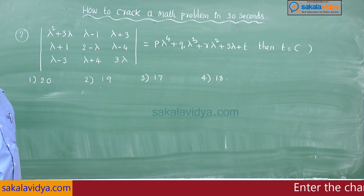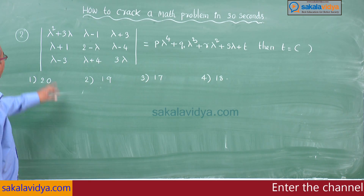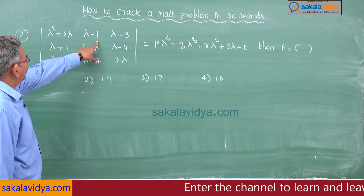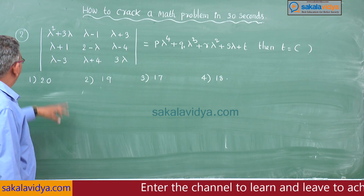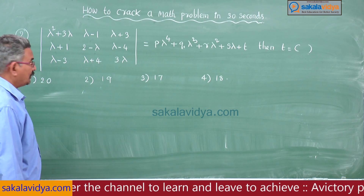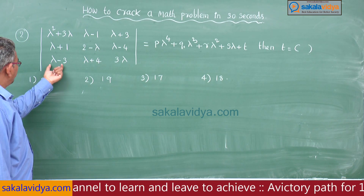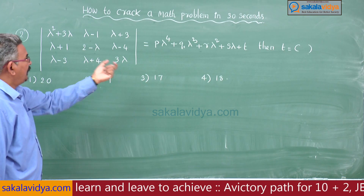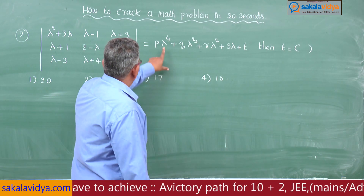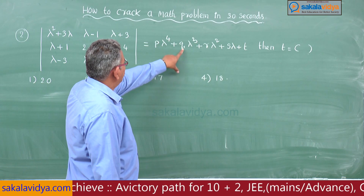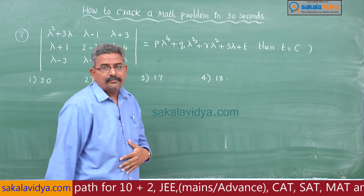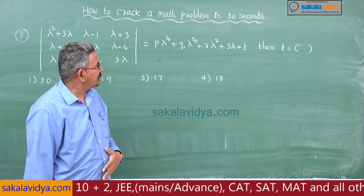Second problem. Data of lambda squared plus 3 lambda, lambda minus 1, lambda plus 3, lambda plus 1, 2 minus lambda, lambda minus 4, lambda minus 3, lambda plus 4, 3 lambda is equal to p·lambda⁴ + q·lambda³ + r·lambda² + s·lambda + t.